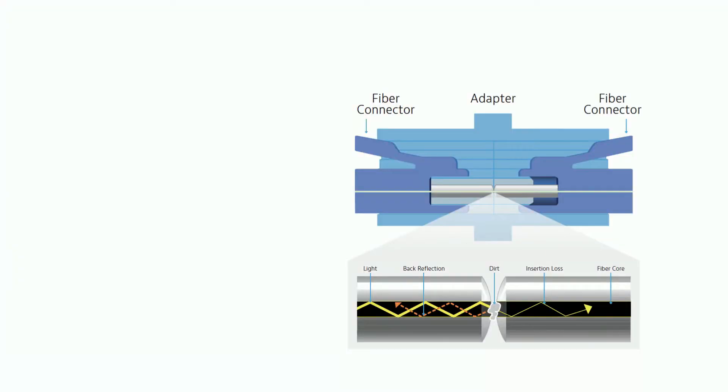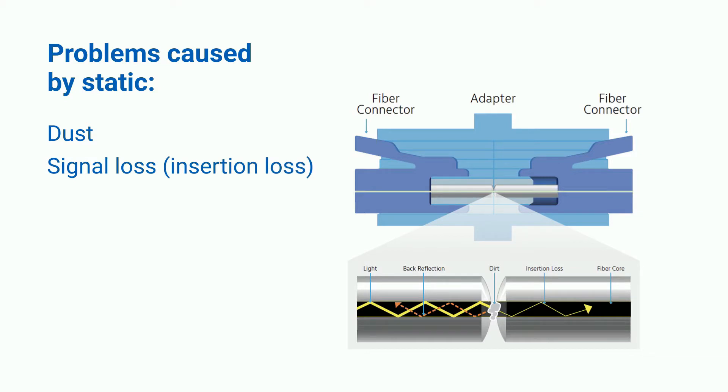Dust causes signal loss, also known as insertion loss, by obstructing the signal's path, blocking the light transmitted along the fiber.